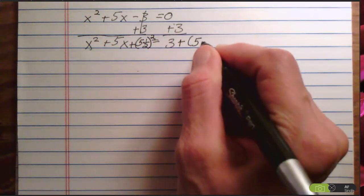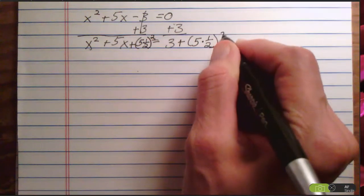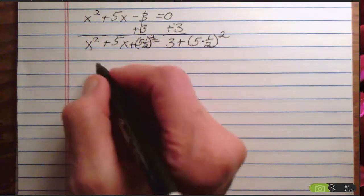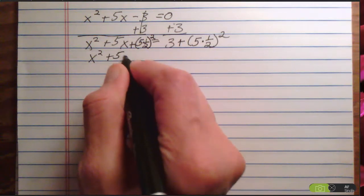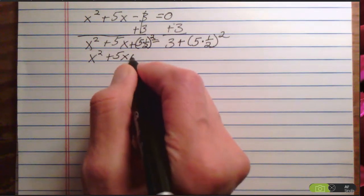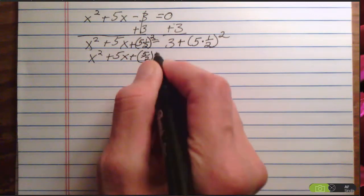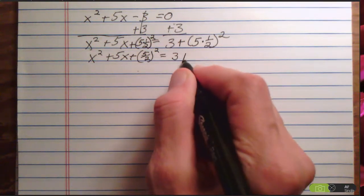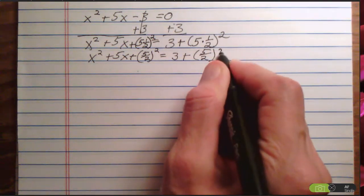My b number is 5. I multiply it by 1/2 and square it. That gives me x² + 5x + (5/2)² = 3 + (5/2)².